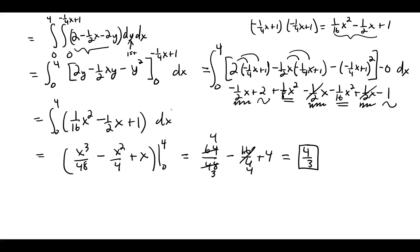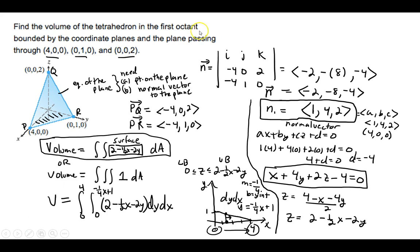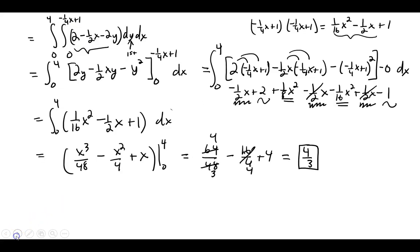We could have done it as a triple integral too. There was work in the beginning to get the equation of the plane—had they given it to us, it would have been easier. Once we got that though, we just set up either a double integral or a triple integral. We chose the double integral and just grinded out the polynomial integration. Thanks a lot. There you go.